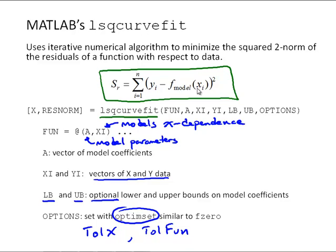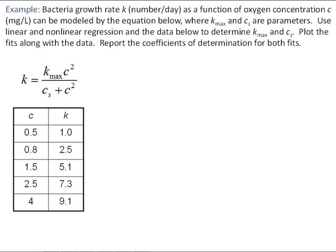You might ask, if it has this direct function for doing this, why are we even talking about fminsearch? It turns out that fminsearch is a little bit more efficient and a little bit more robust in that it will work with initial guesses that are farther off what they should be. We're going to return to that example from before, the bacterial growth model, and look at doing two additional curve fits, one with fminsearch and one with lsqcurvefit.